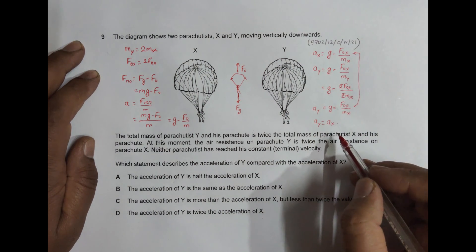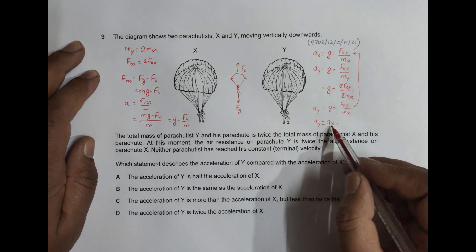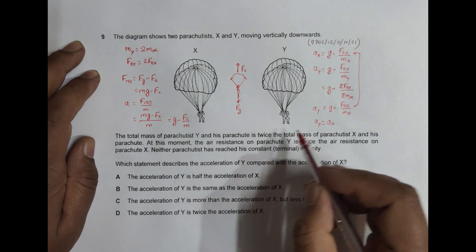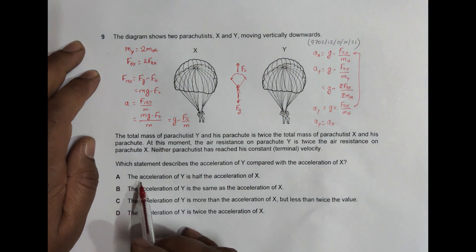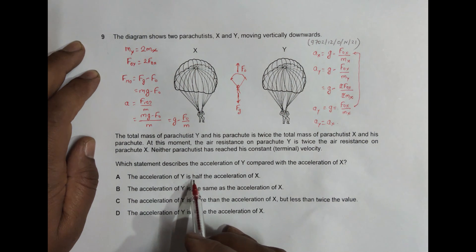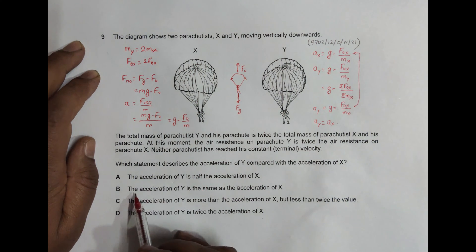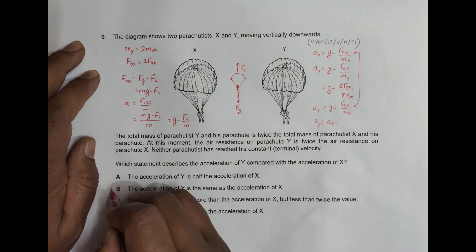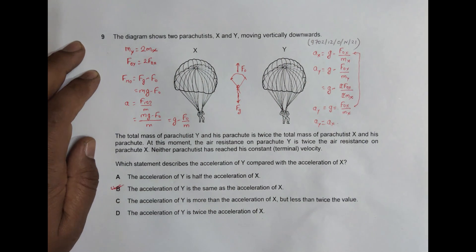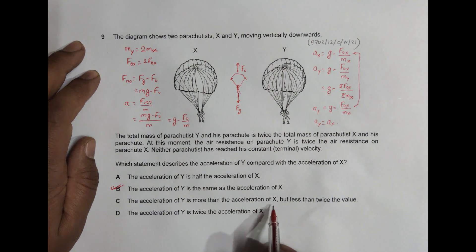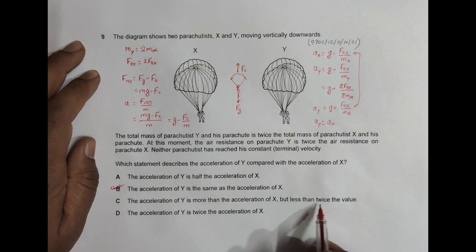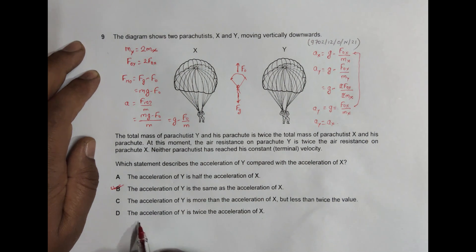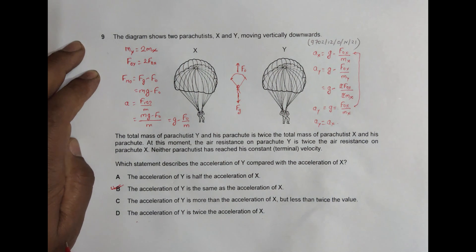So at this moment, ay equals ax — the two accelerations are equal. Looking at the answer choices: choice A says ay is half of ax, which is not correct. Choice B says ay is the same as ax — that is correct. The other options suggesting ay is greater than ax are also incorrect. So B is the correct choice.